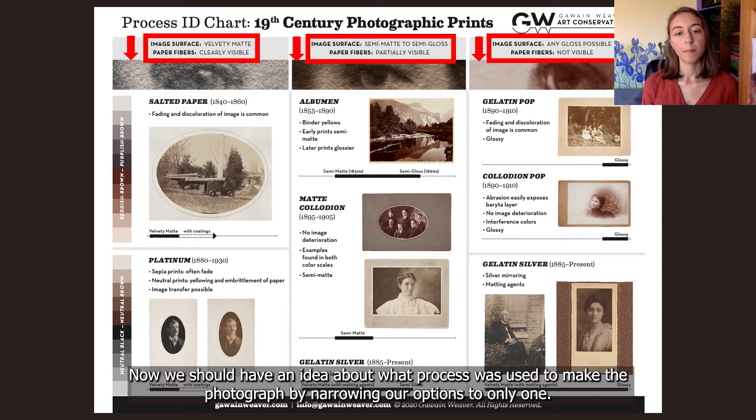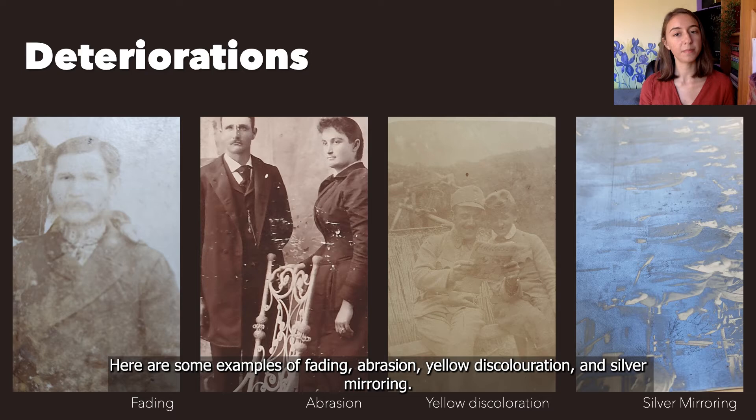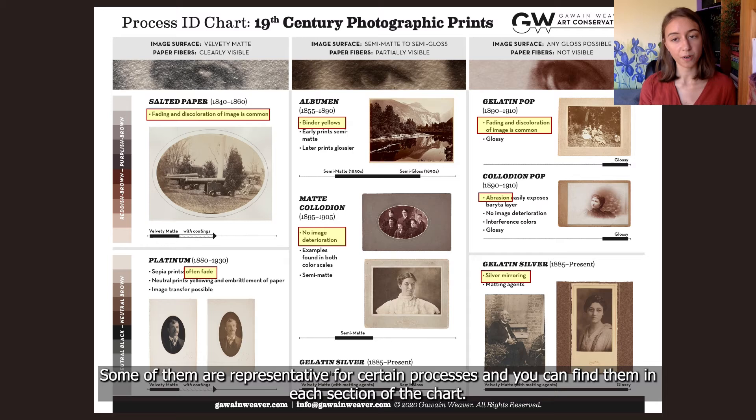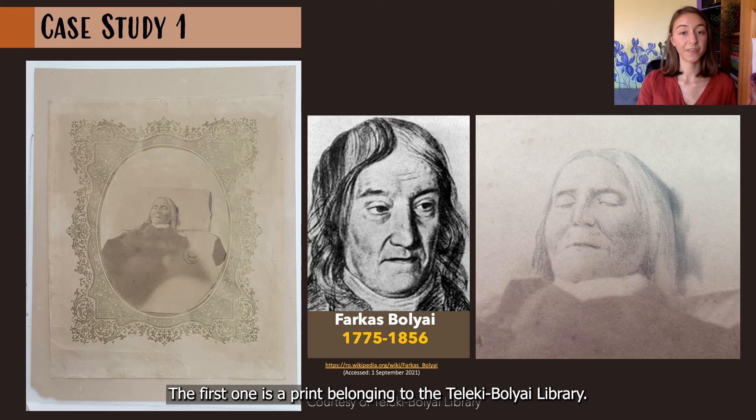Now we should have an idea about what process was used to make the photograph, having narrowed our options to only one. But if we still aren't sure, we can examine if there are any deteriorations. Here are some examples of fading, abrasion, yellow discoloration, and silver mirroring. Some of them are representative of certain processes and you can find them in each section of the chart. So these are the key steps I followed in the next case studies.